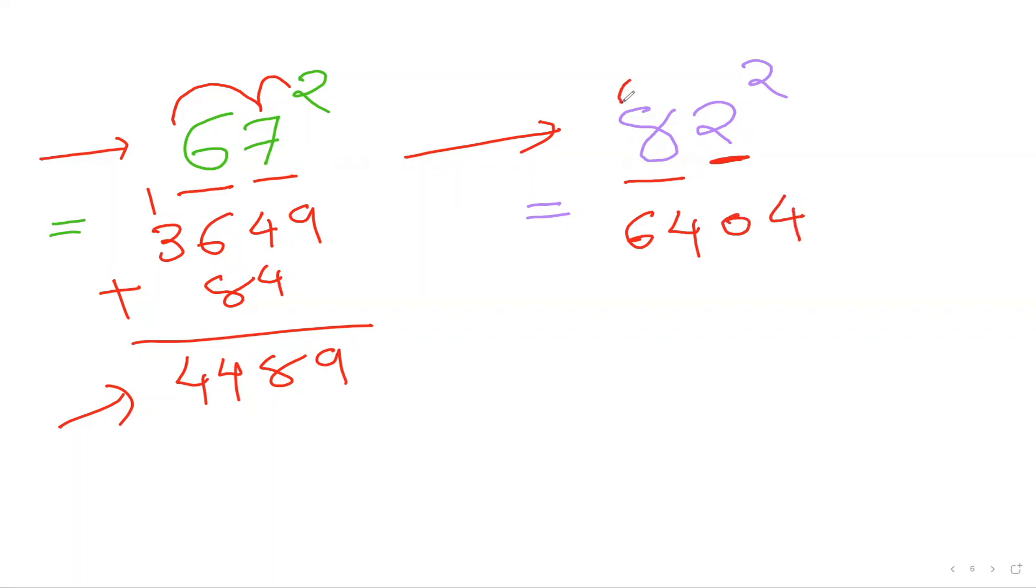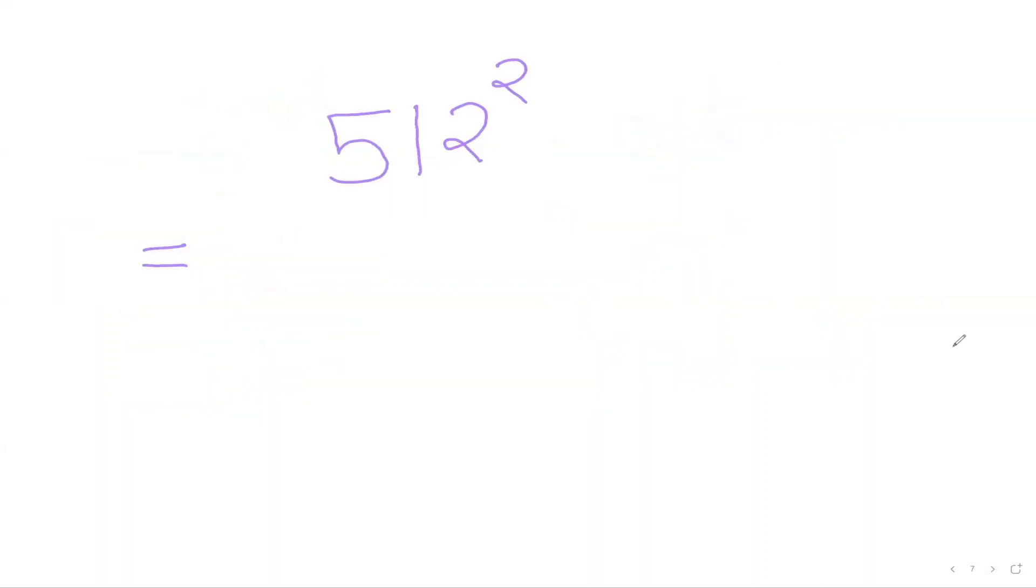Then I'll do 8 times 2, which is 16 and 16 times 2, which is going to be 32. I can put 12 and 4. So 82 square is 6724, guys.